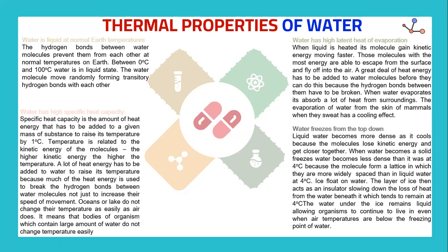Water freezes from the top down. Liquid water becomes more dense as it cools because the molecules lose kinetic energy and get closer together. When water becomes a solid and freezes, it becomes less dense than at 4°C because the molecules form a lattice in which they are more widely spaced than in liquid water. The layer of ice then acts as an insulator, slowing down the loss of heat from the water beneath it, which tends to remain at 4°C. The water under the ice remains liquid, allowing organisms to continue to live even when air temperatures are below the freezing point of water.